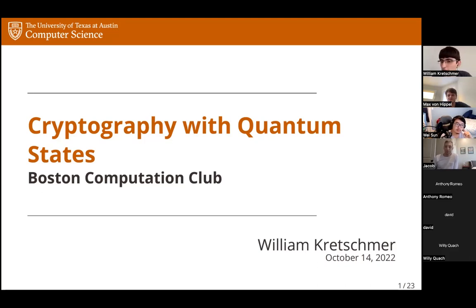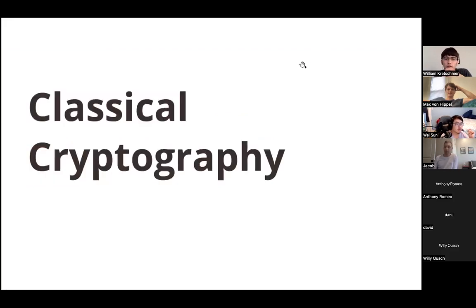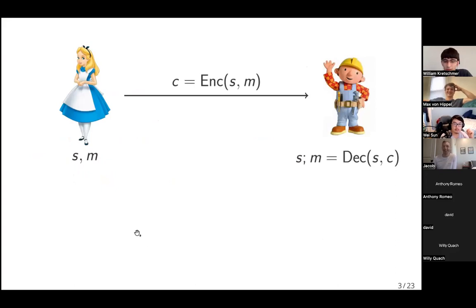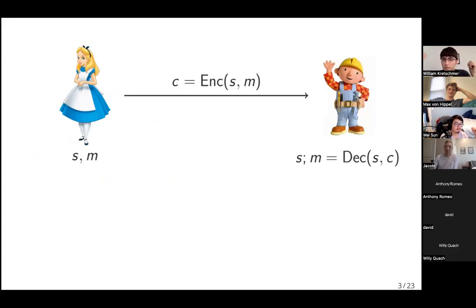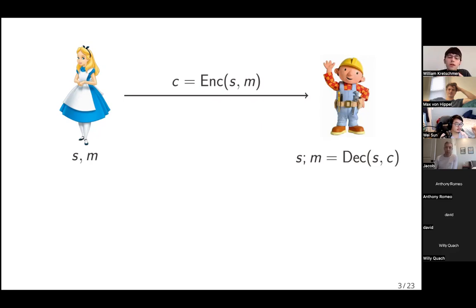I imagine this will be stuff that a lot of you have seen before, but I think it'll be helpful to go through and illustrate what some of the key issues are. I'm going to start with arguably the simplest possible example in cryptography. You always have two players named Alice and Bob, and the simplest example of a cryptographic task is where Alice wants to send Bob some secret message M. We'll suppose that Alice and Bob have shared in advance some secret key S. Alice has some encoding algorithm by which she can encode her message with the secret key S, producing a ciphertext C, and Bob has some decoding algorithm by which he can recover the message M from the secret and the ciphertext.